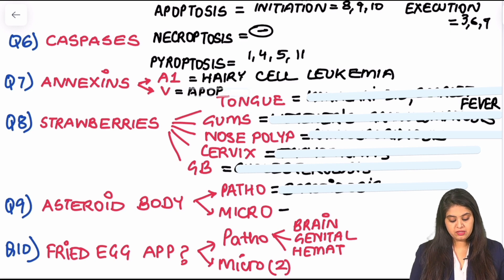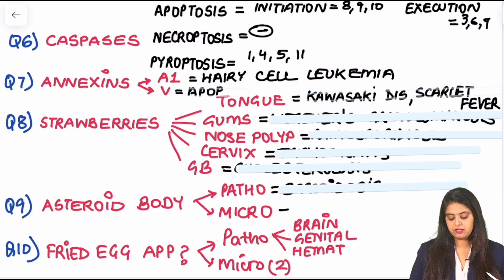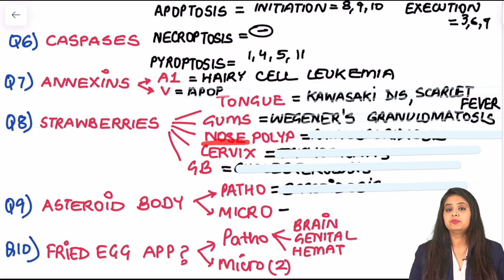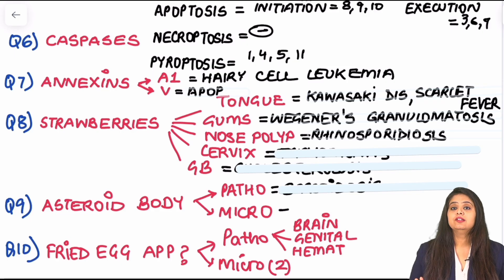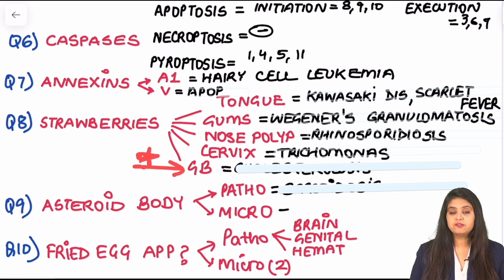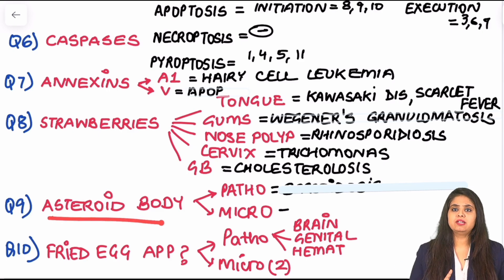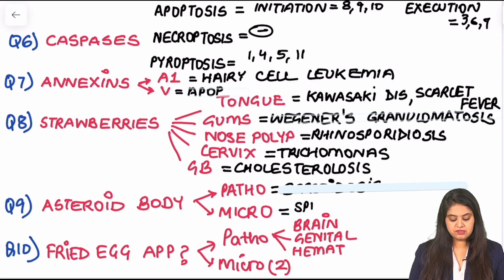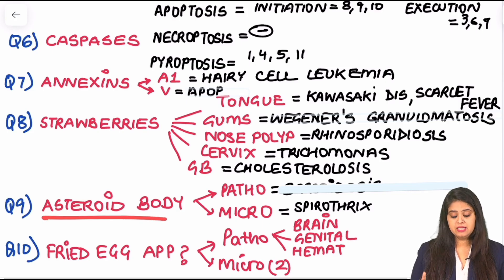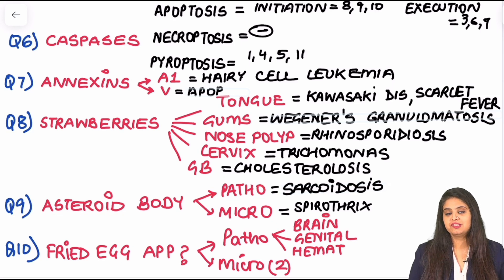Strawberry nasal polyps are seen in rhinosporidiosis caused by Rhinosporidium seeberi. Strawberry cervix is seen in Trichomonas vaginalis, a sexually transmitted disease. Strawberry gallbladder is for surgery — yellow dots in the gallbladder from cholesterol, known as cholesterolosis of the gallbladder. Next one-liner: asteroid body — in microbiology it is seen with Sporothrix schenckii (rose gardener's disease); in pathology, an asteroid body along with Schaumann body is seen in sarcoidosis.